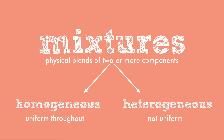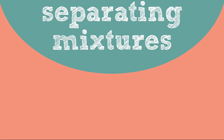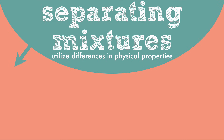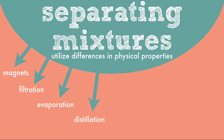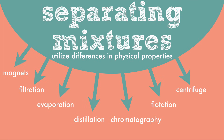Homogeneous mixtures have one phase, meaning you can only see one thing. Heterogeneous mixtures have two or more phases, meaning there are more things you can see in the mixture. It is possible to separate mixtures by utilizing differences in physical properties. There are tons of different ways to separate: using magnets on certain metals, filtration through fine paper to get grit out of a solution, evaporation to boil off water, distillation to separate two liquids, chromatography to separate dyes, flotation to capture substances that can float, centrifuge to collect denser substances, and sieves or mesh for sifting larger objects.